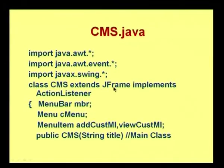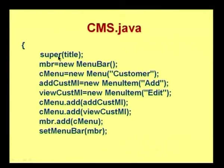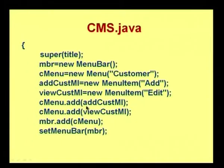Here we have created a class CMS which extends JFrame — the J prefix means it is from Swing — and implements ActionListener, which is from AWT. I am creating a menu bar, then creating a menu, and then creating two menu items. These two menu items are going to navigate you to your AddFrame as well as your ViewFrame. In the constructor you need to load all the components.